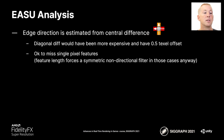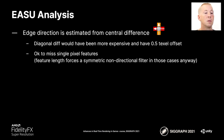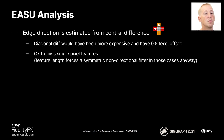Once the taps are in, the edge direction is estimated using a central difference. The central difference does miss single-pixel features; however, as feature length becomes very small, the filter kernel becomes symmetric and non-directional, so we don't care about directionality for thin features. Therefore a diagonal diff is not used — it would have been more expensive and would have introduced a half-texel offset, making the logic more complicated.